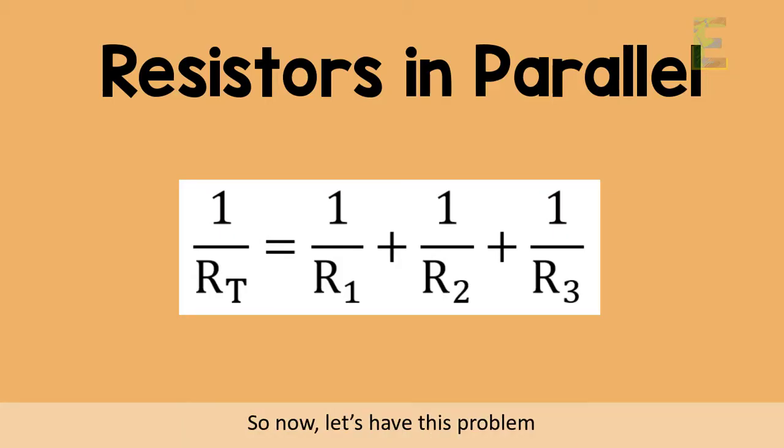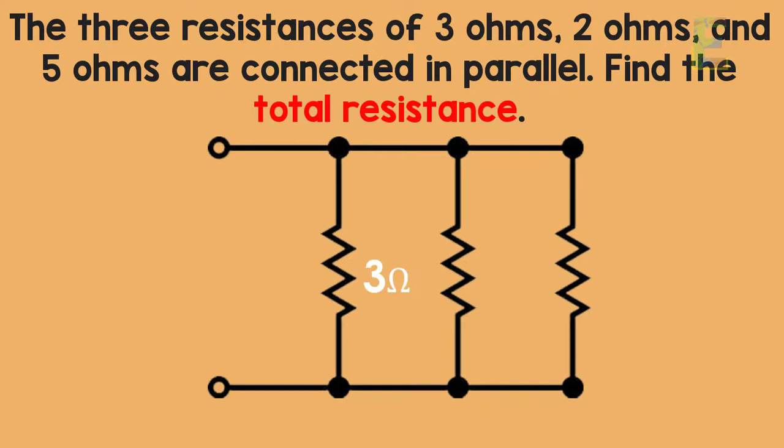So now, let's have this problem. The 3 resistances of 3 ohms, 2 ohms, and 5 ohms are connected in parallel. Find the total resistance.